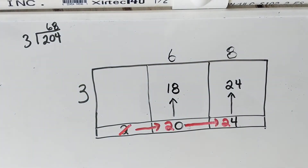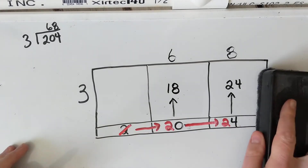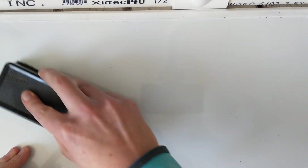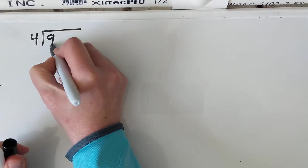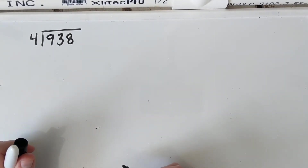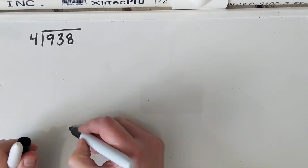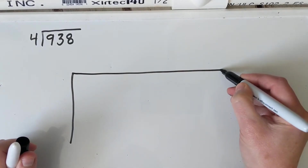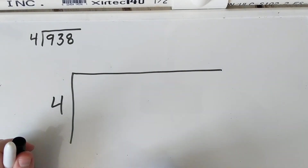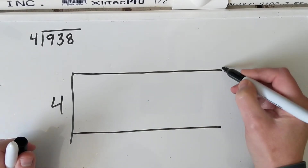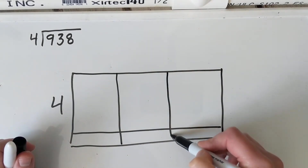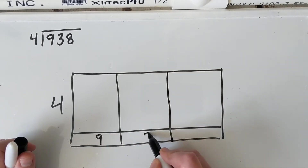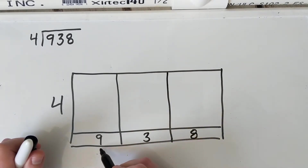I'm going to give you another example. The next example is a bit of a bigger number — nine hundred and thirty eight divided by four. Once again you don't have to set up this fusion machine because it's already set up for you in Google Slides. So I'm going to be dividing by four and I'm going to put nine hundred and thirty eight into my fusion machine.